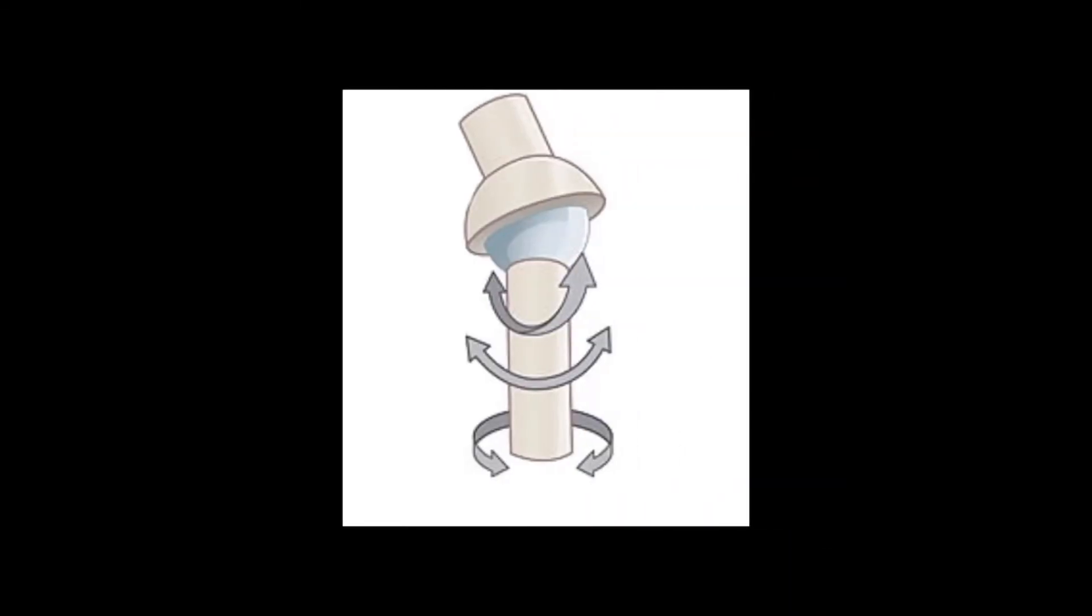The first one is ball and socket joint. A classic example of a ball and socket joint is the hip joint. Ball and socket joints are pretty cool because they can move in many ranges of motion. They can go anterior, posterior, they can move laterally or medially, and they can also rotate their axis.